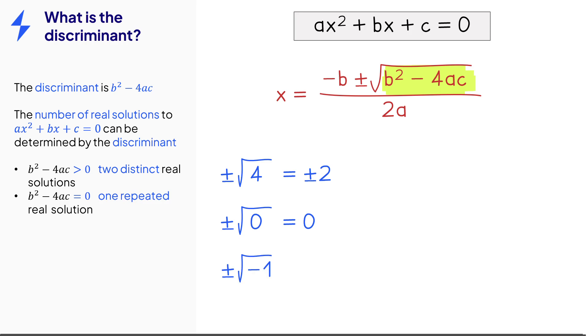And if the discriminant is negative, then there will be no real square roots, and the formula will not give us any real solutions.